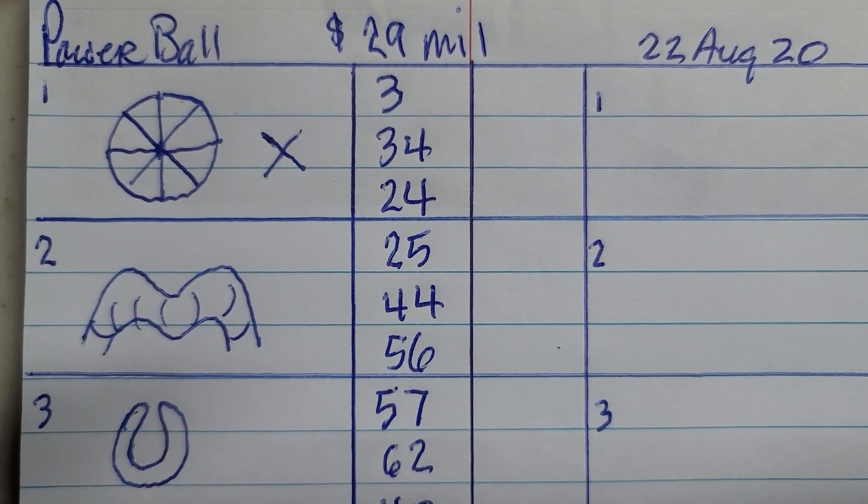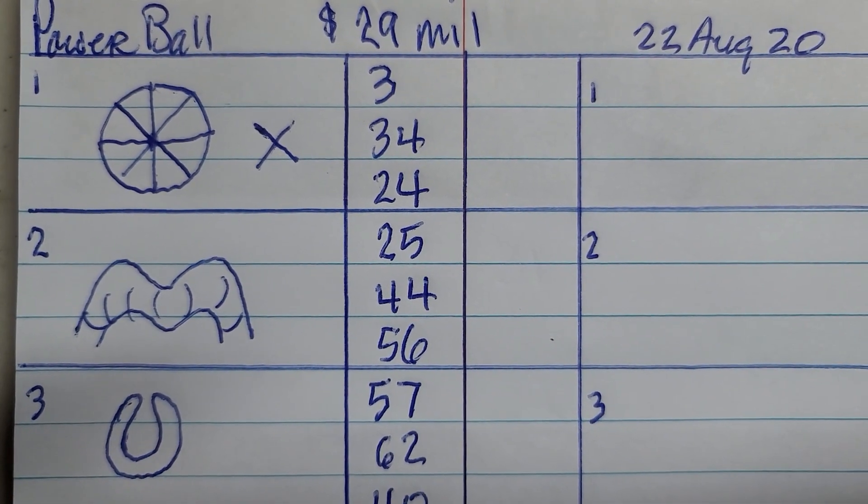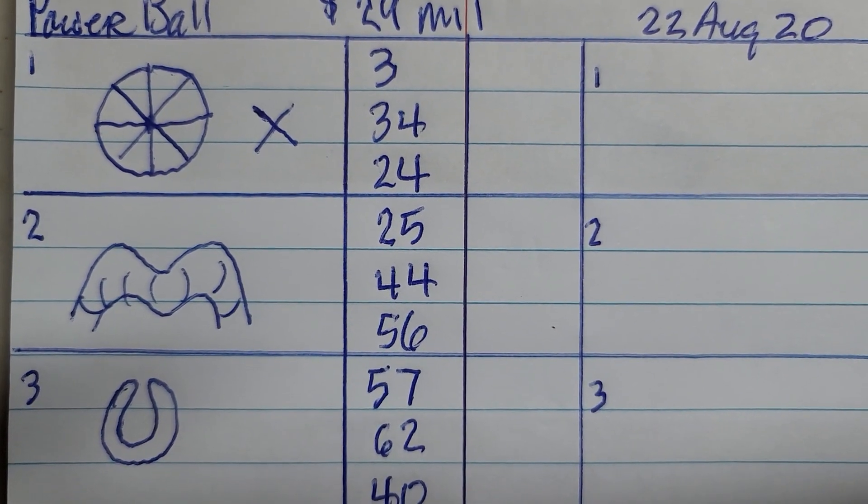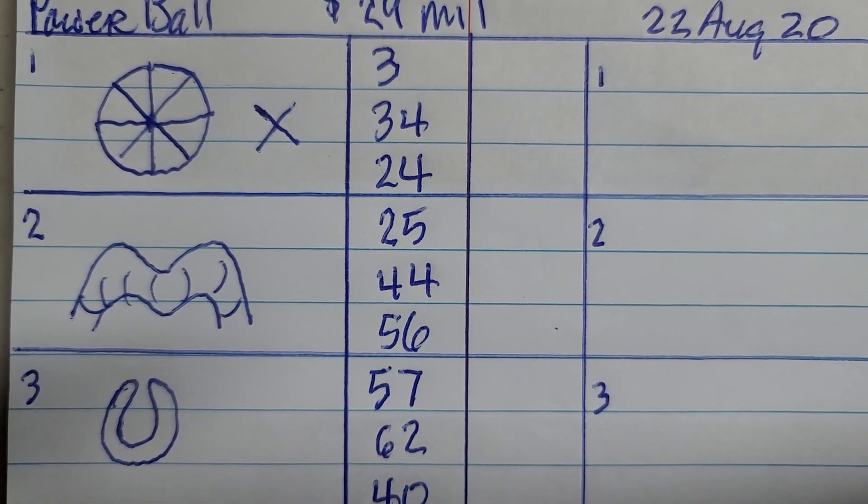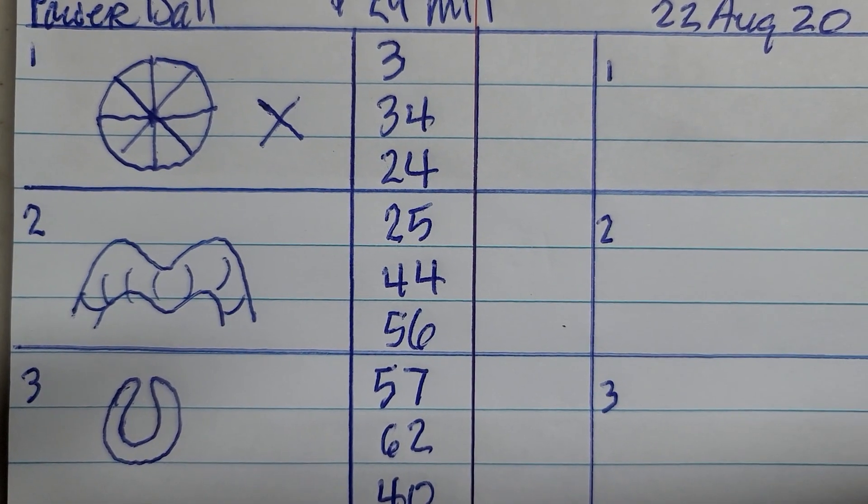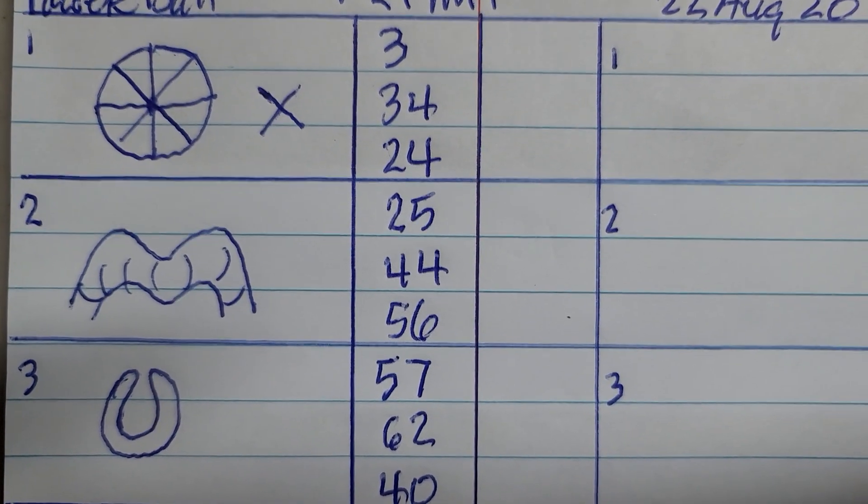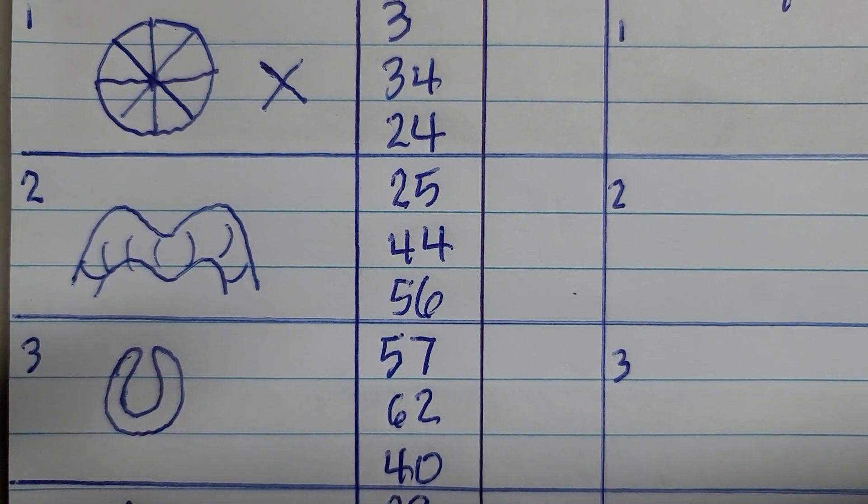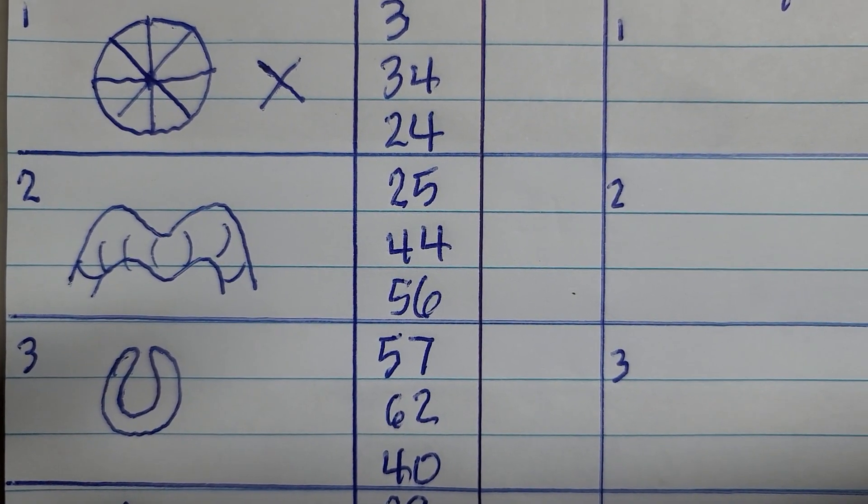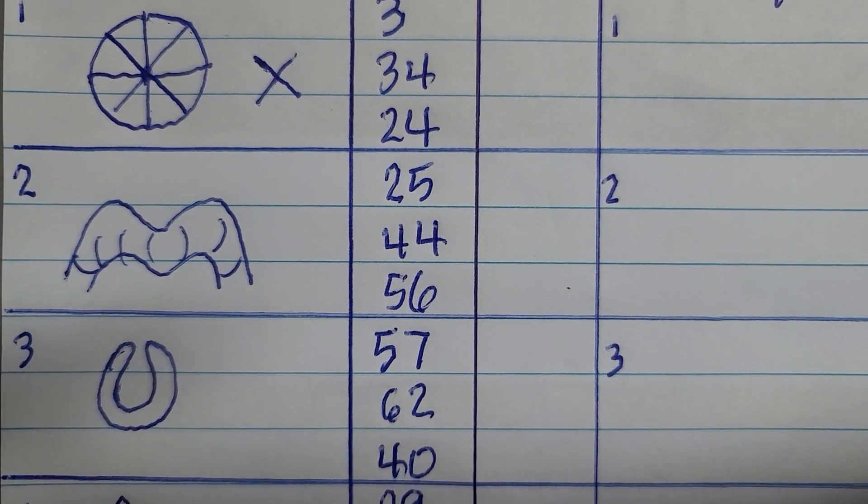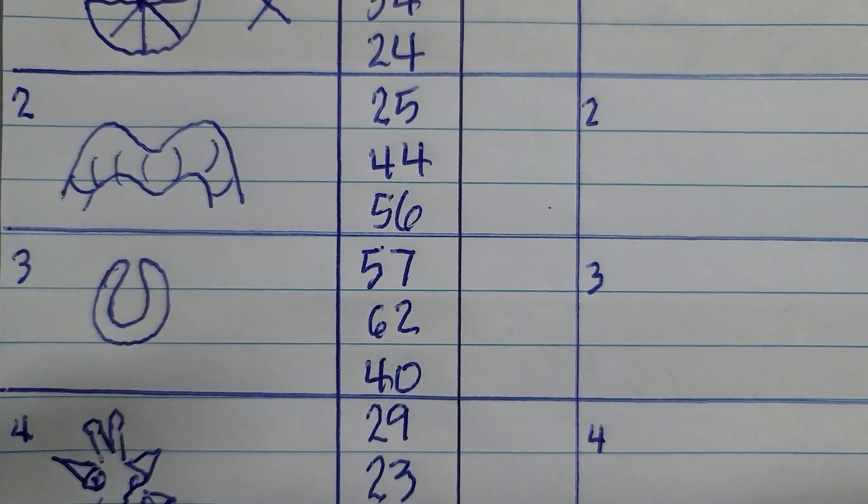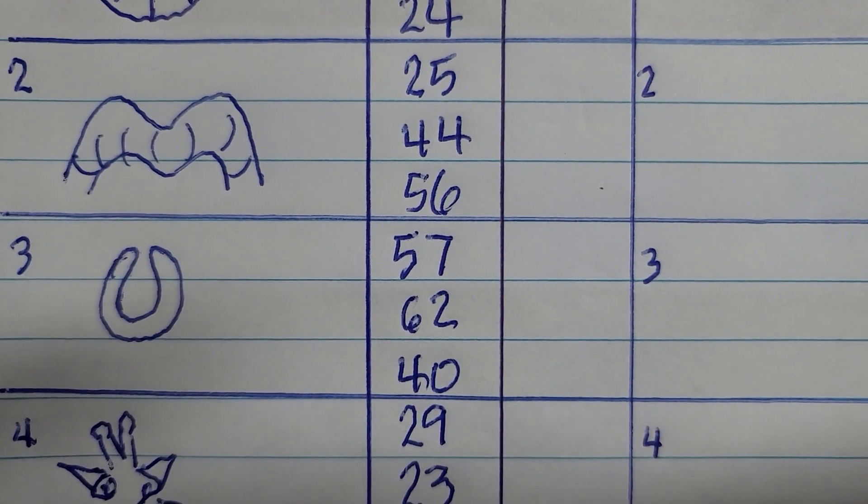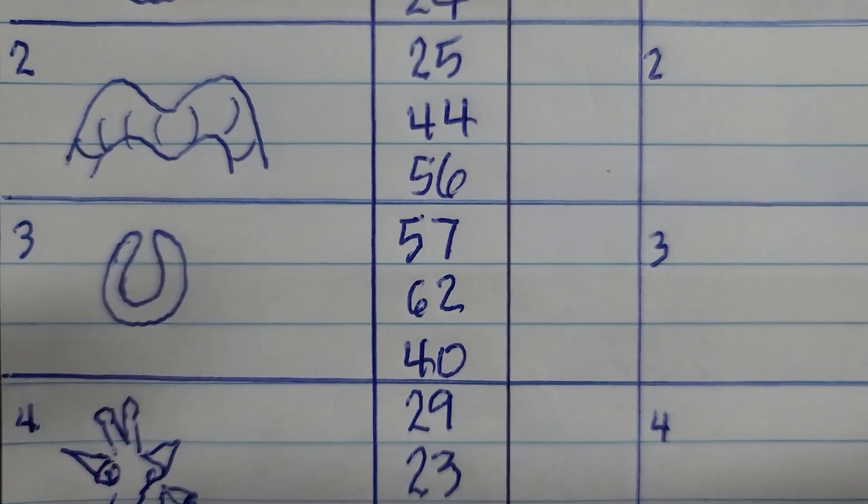The first sketch is a wheel from a tricycle, so the numbers associated with that are 3, 34, and 24. The next sketch is a jungle gym, and the numbers associated with that are 25, 44, and 56. The next sketch is a horseshoe, and the numbers associated with that are 57, 62, and 40.